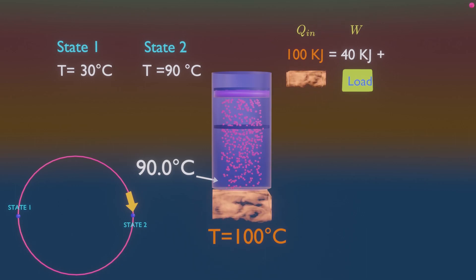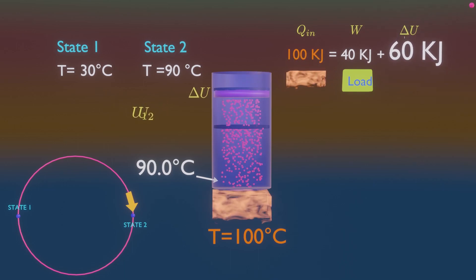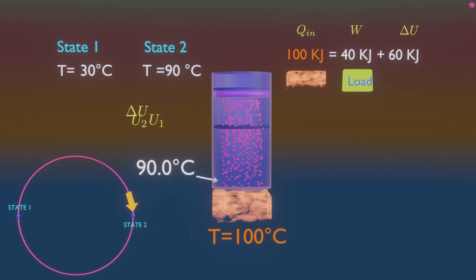Now it raises the question about what happened to the other 60 kilojoules of energy. According to first law energy conservation, this extra energy is used to increase the change in internal energy of gas, which is change of energy from state 1 to state 2.